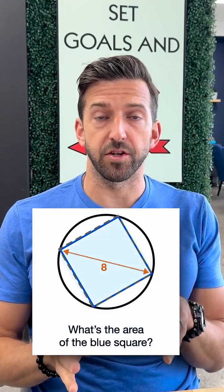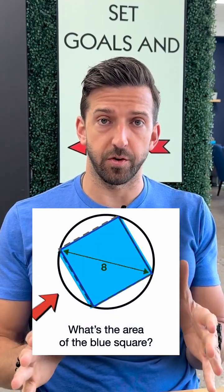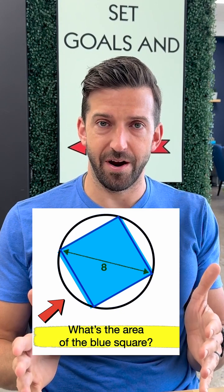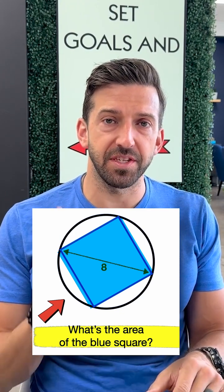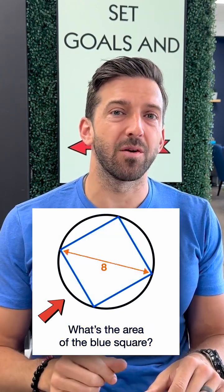Given the diagram where the blue square is perfectly inscribed in this circle, what's the area of the square? Now pause the video for a moment, see if you can solve it, and then hit play when you're ready for the solution.